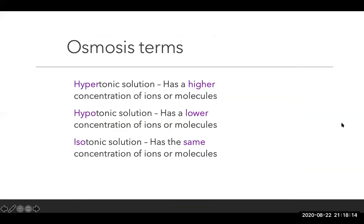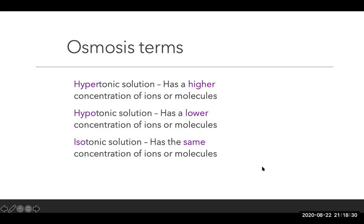Some osmosis terms: a hypertonic solution — hyper means more — has a higher concentration of ions or molecules. A hypotonic solution has a lower concentration of ions or molecules, and an isotonic solution has the same concentration of ions or molecules.